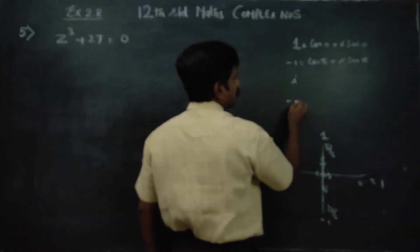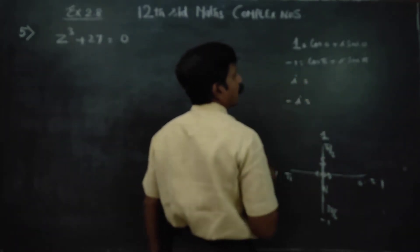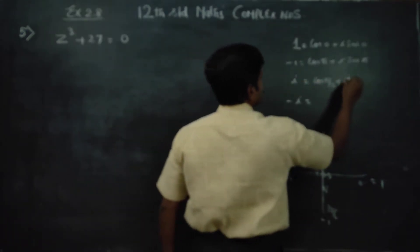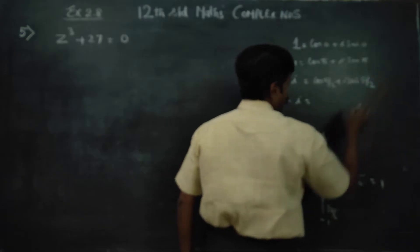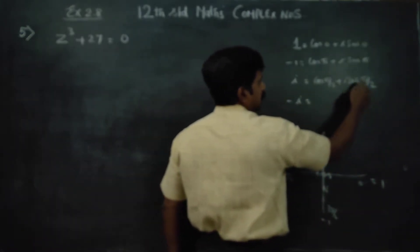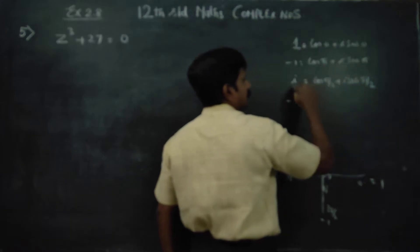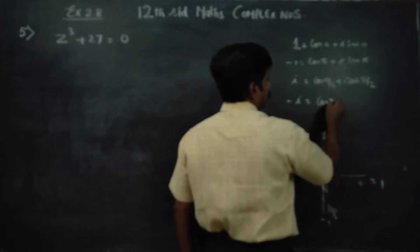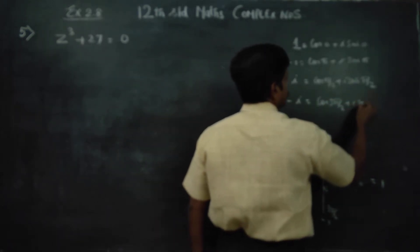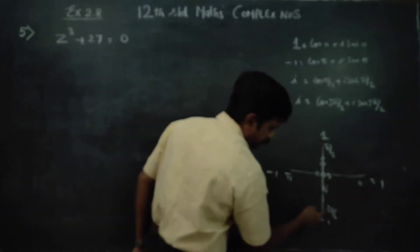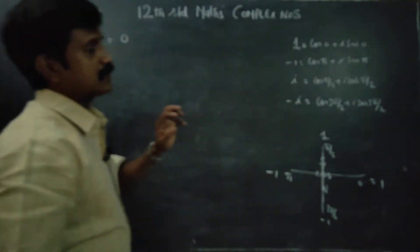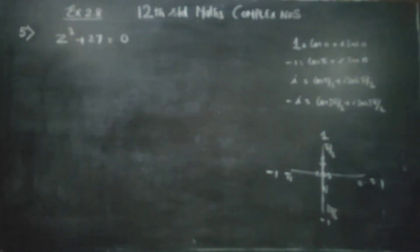Similarly, for plus i and minus i there are ready-made polar forms. For plus i, the ready-made polar form is cosπ/2 plus i sinπ/2, because sin90° is 1 and 1 times i is i, while cos90° is 0. For minus i, it is cos3π/2 plus i sin3π/2, because sin3π/2 is minus 1 and minus 1 times i is minus i.